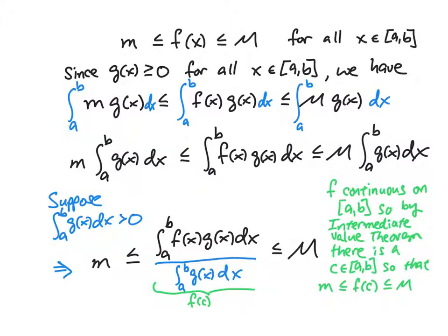So f is continuous on [a,b], so by the Intermediate Value Theorem that I mentioned before at the beginning of this video, there's a c in the interval [a,b] so that f(c) actually attains the values between little m and capital M. That means this term here is actually equal to some f(c), and so now the proof is essentially complete.